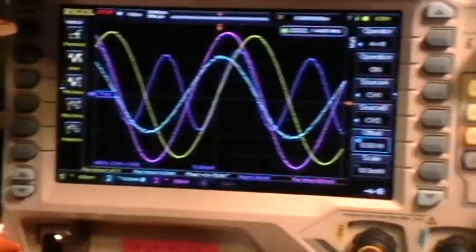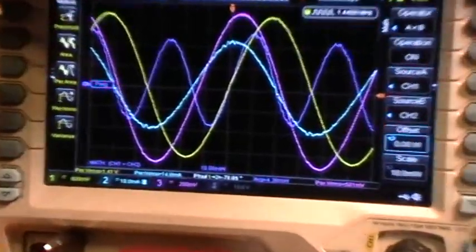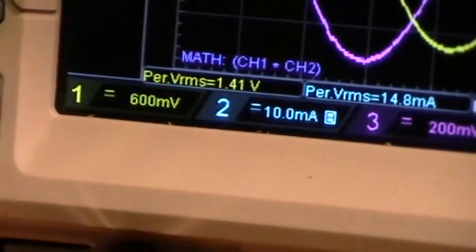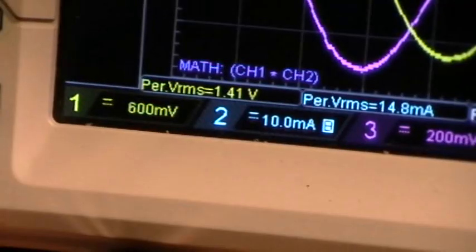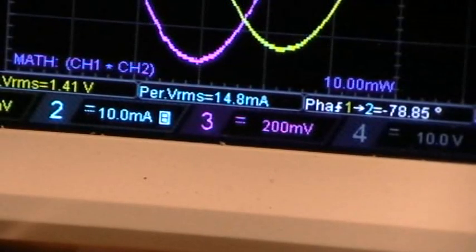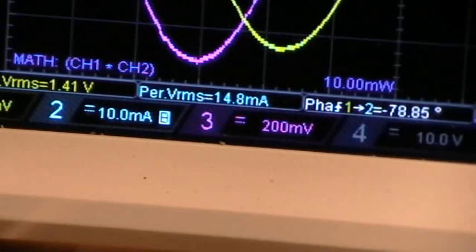Okay, so now let's do some calculation. Okay, now I'm going to do a calculation from the values shown on the scope. If I can get it to focus, channel 1 input voltage 1.41 volts RMS for one period, channel 2 input current 14.8 milliamps or 0.0148 amps RMS for one period.